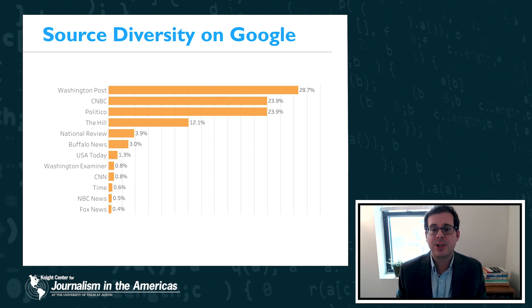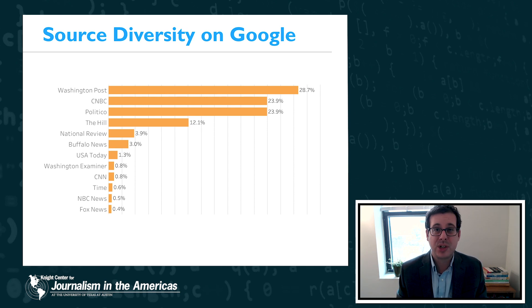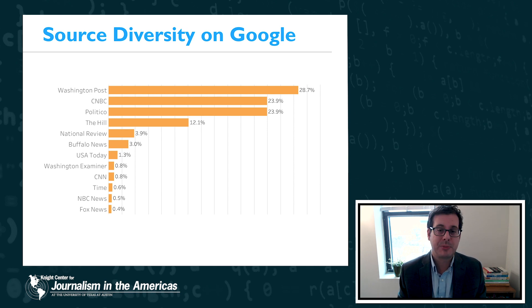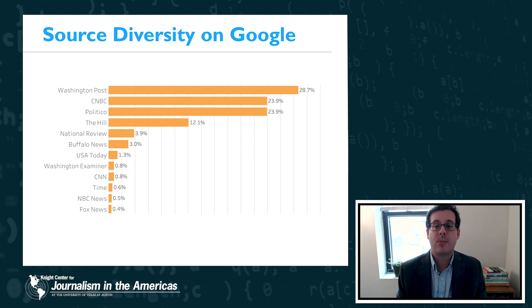In other experiments we ran during the 2016 elections, for searches for Hillary Clinton and Donald Trump, we found that just two news sources — the New York Times and CNN — dominated about 44% of the news links we found. So this is just one example for one query on one particular day, but what we found is that there wasn't a lot of diversity in the news sources that Google was exposing searchers to. That can have all kinds of implications for the diversity of perspectives people are exposed to, as well as the amount of traffic being driven to different news outlets — more traffic going to large outlets like the Washington Post than to more local news outlets.